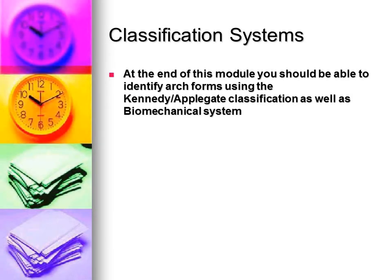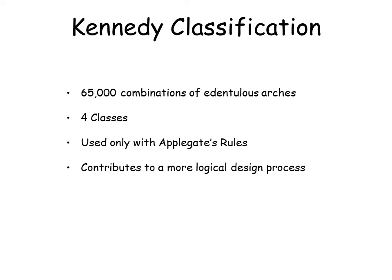You should be able to classify any arch according to the Kennedy-Applegate classification, as well as the biomechanical classification. The systems were designed to classify arch forms, but are equally applied to partial denture designs. It is possible to have an arch form of one classification and a partial denture of a different type. Because of the large number of variations in the distribution of missing teeth, partial denture design is simplified by having a system of classification.